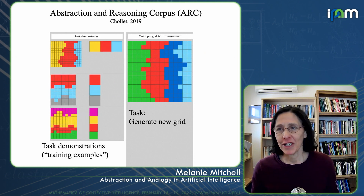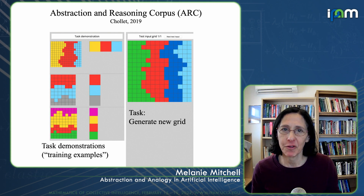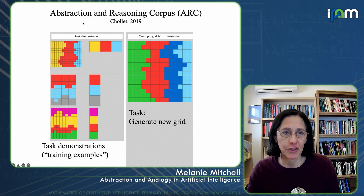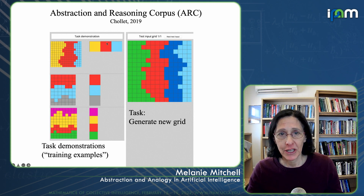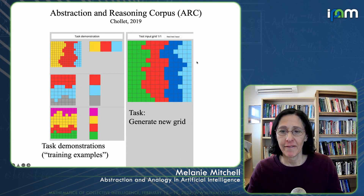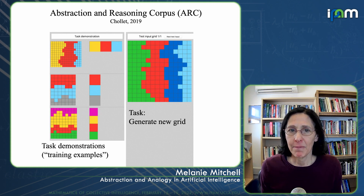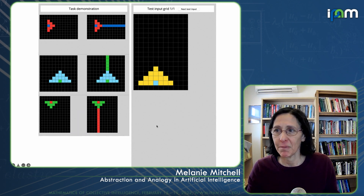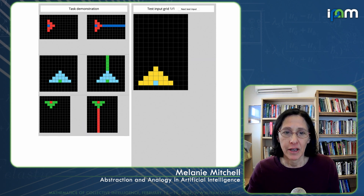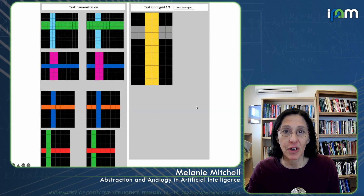A more recent version of an idealization of abstraction comes from Google's François Chollet, who built the so-called Abstraction and Reasoning Corpus. He proposed it a few years ago: you have visual grids of colors and you make some kind of transformation. You show a few examples of the transformation — those are like the training examples — and then you have a test example that you need to make the same transformation on. These might be a little bit easier to address than the more difficult Vanguard problems, and yet these are still beyond the ability of any current AI systems to solve.